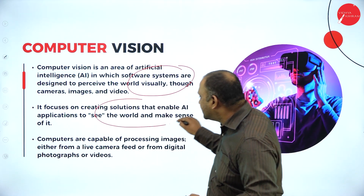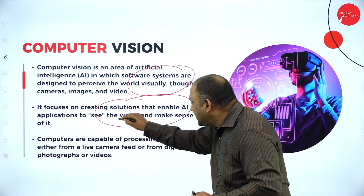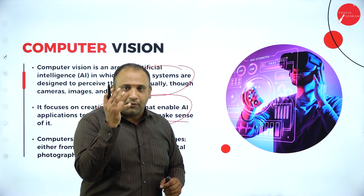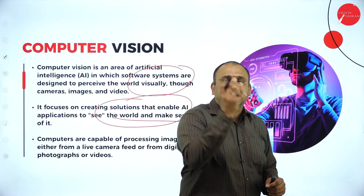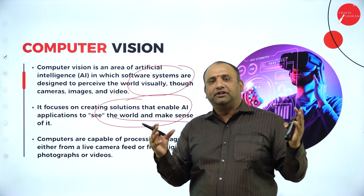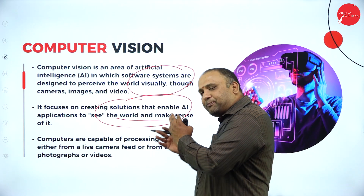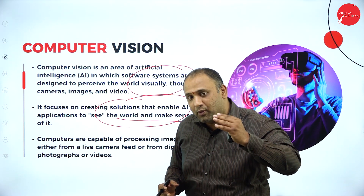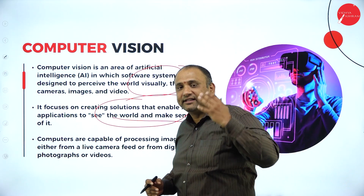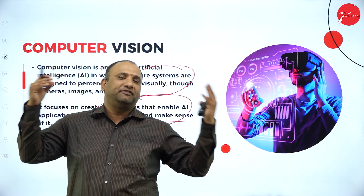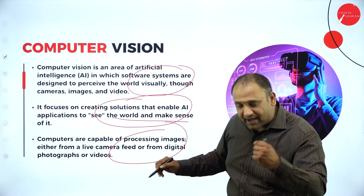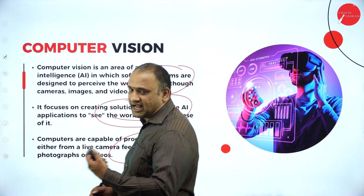Computer vision focuses on creating solutions that enable AI to see the world and make sense of it. The visual experience of any image, text, movie, or any channel creates a greater interest among people, and that's where this vision technology comes into picture. The computers are capable of processing images either from a live camera feed, a digital photograph, or a video.